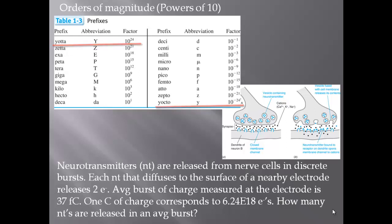Just to practice unit conversions and powers of 10, let's do a problem. The box at the beginning of this chapter describes neurotransmitters released from a nerve cell in discrete bursts. Each neurotransmitter that diffuses to the surface of a nearby electrode releases two electrons. The average burst of charge measured at the electrode is 37 femtocoulombs. One coulomb of charge corresponds to 6.24 × 10¹⁸ electrons. The question asks: how many neurotransmitters are released in an average burst?